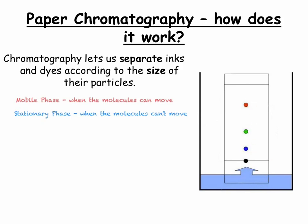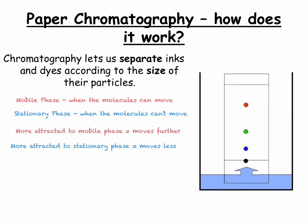So as the water — which is our solvent — travels upwards, the substance gets dissolved and it will travel upwards. How far a chemical moves depends on how it's distributed between the two phases. If the substance is more attracted to the mobile phase, then it will move further. If it is more attracted to the stationary phase, then it won't move as far. This also depends on their size, as particles which are larger will be more attracted to the stationary phase, and particles which are smaller will be more attracted to the mobile phase.